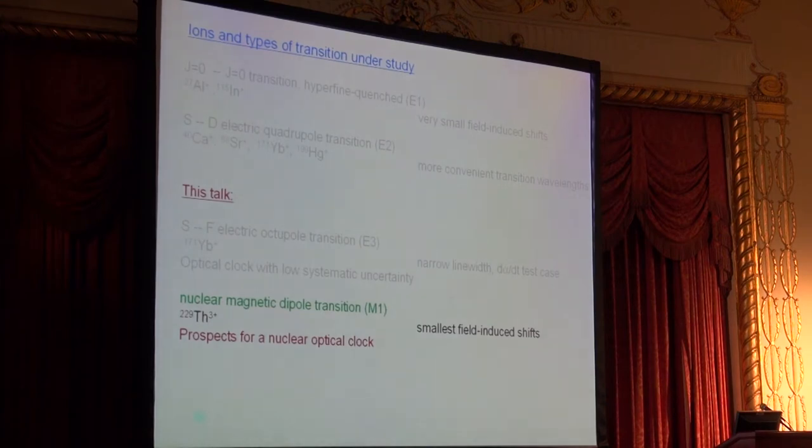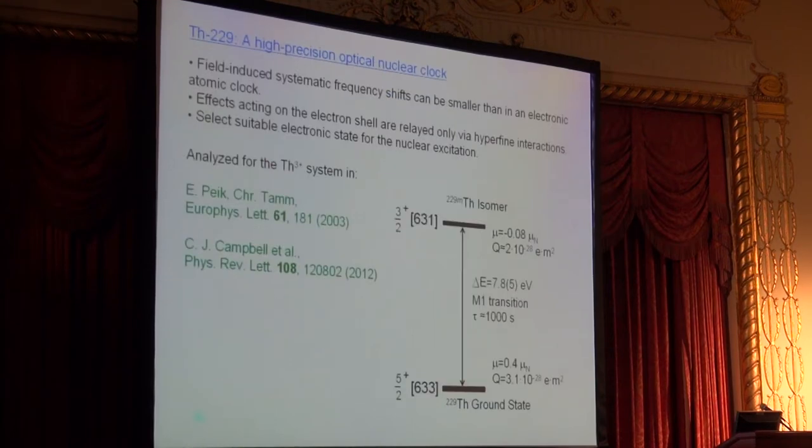For the remaining five minutes, I'd like to switch to the nuclear transition in thorium plus, which offers prospects for a very high-precision optical clock with the smallest field-induced shifts. This is a system that we are interested in—the forbidden transition in the thorium-229 nucleus. It is a magnetic dipole, not so very strongly forbidden, but since it is in the nucleus, even at 8 eV energy, it has a lifetime of about 1000 seconds, offering a millihertz linewidth. The smallness of the nuclear moments makes this attractive in terms of field-induced systematic shifts. That is a very rough hand-waving picture—one needs to look at this more in detail because there are hyperfine interactions that couple the electronic and the nuclear degrees of freedom.